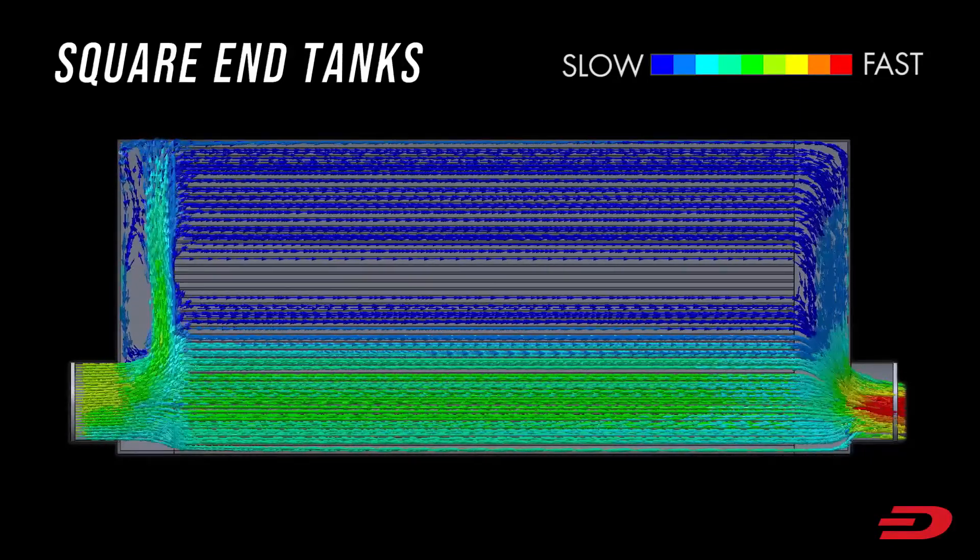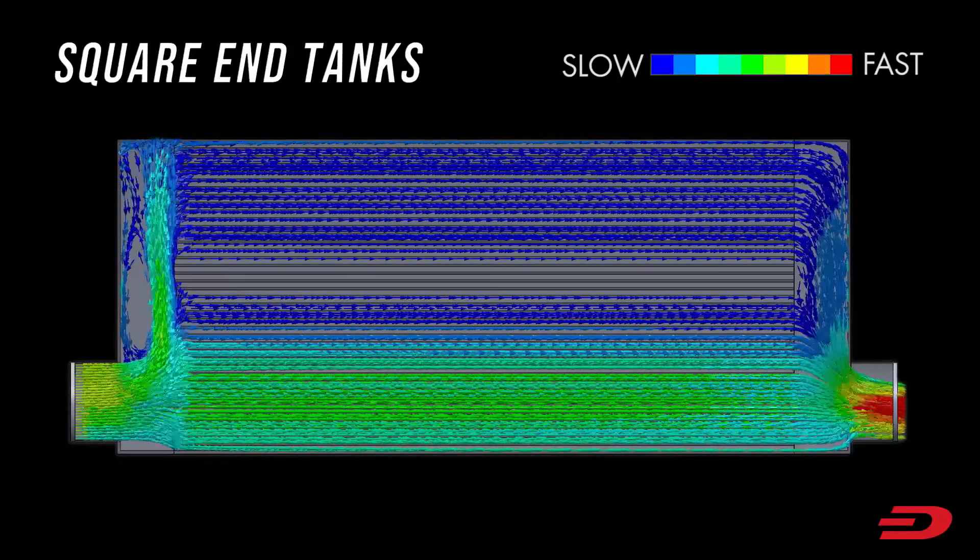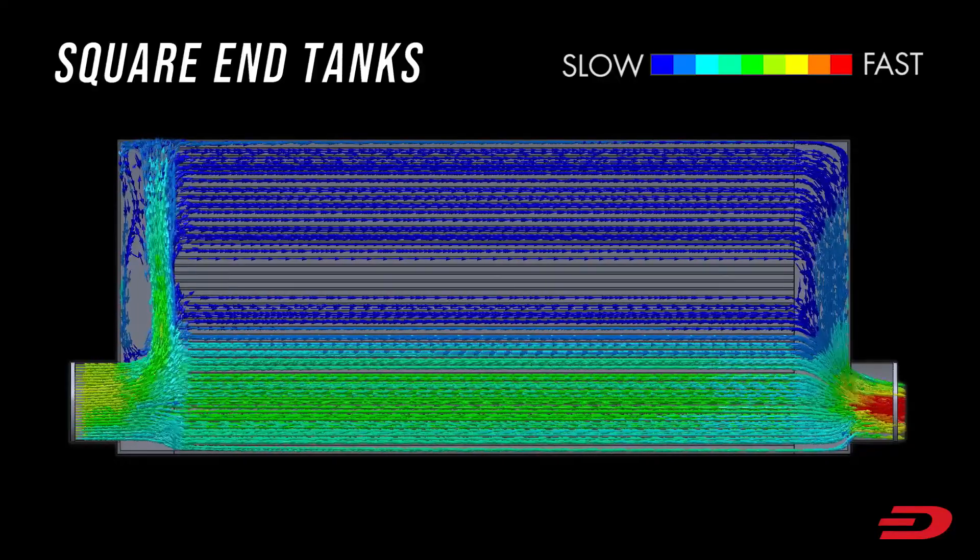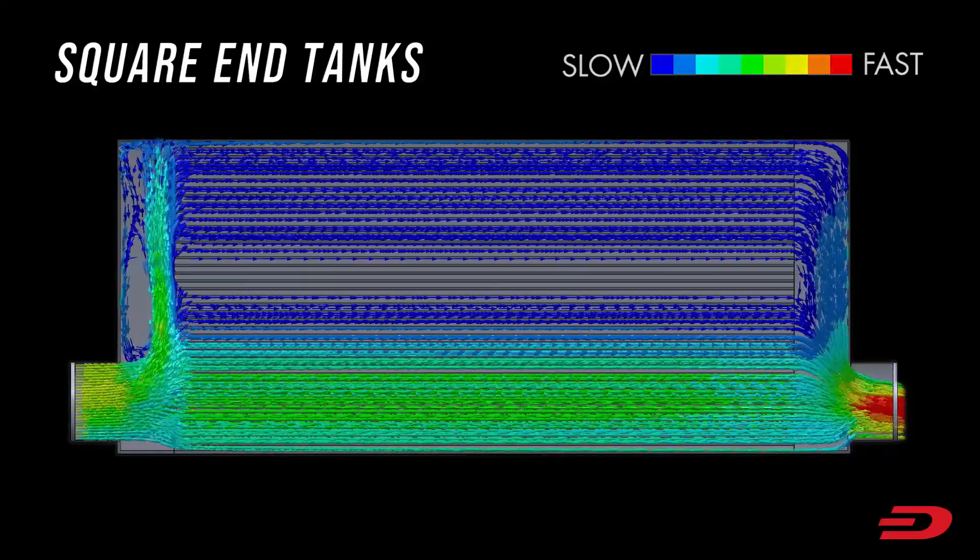In an ideal intercooler, we want the air to be spread evenly across the core and traveling as slow as possible. This results in the maximum possible heat transfer.